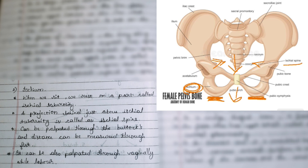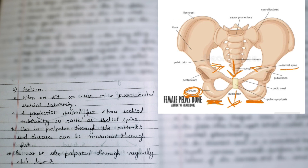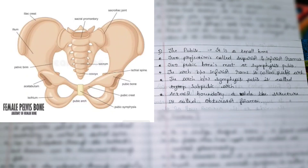The ischium has a very important function at the time of delivery. When the baby passes through this way, the baby's head is internally rotated, and that function takes place at the ischium. If the baby's head is unable to pass through, then we use forceps to get the baby out — and even this function is performed at the ischium.